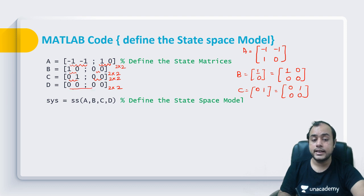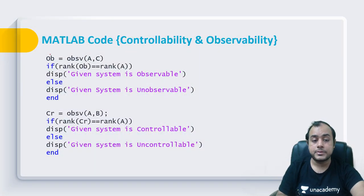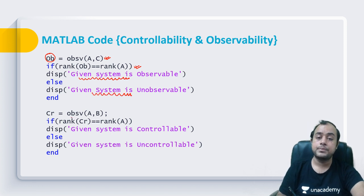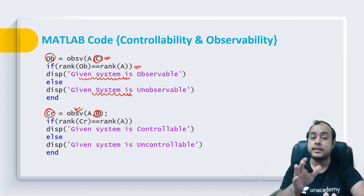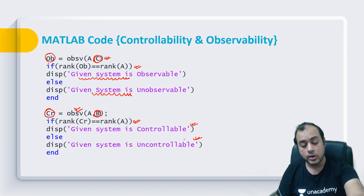Matrix C was [0, 1] so we make it 2×2: [0, 1; 0, 0]. D was absent so it contains all zeros. To input the state model you use the command 'ss', which saves the state model. For the observability matrix you use 'obsv(A, C)', and for controllability 'ctrb(A, B)'. Then use an if-else statement: if rank of observability equals rank of A, display 'given system is observable', else display 'given system is unobservable'. Similarly compare rank of controllability matrix with rank of A.